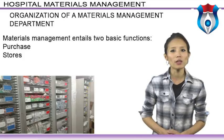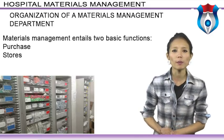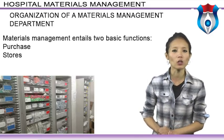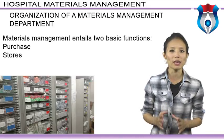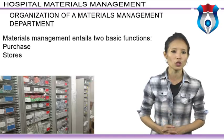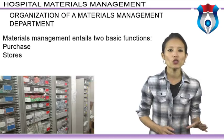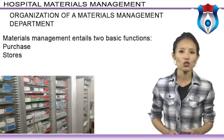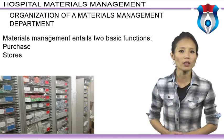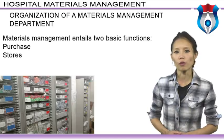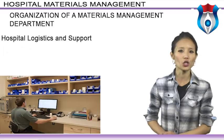Materials management entails two basic functions: purchase and stores. These two functions may be carried out independently but in coordination, as a separate stores department and a purchase department, or the two functions may be integrated into a single store-purchase department. Separate departments for purchase and store functions ensure minimization of collusion, formalization of data necessary for making effective purchases, and specialization, hence greater efficiency.